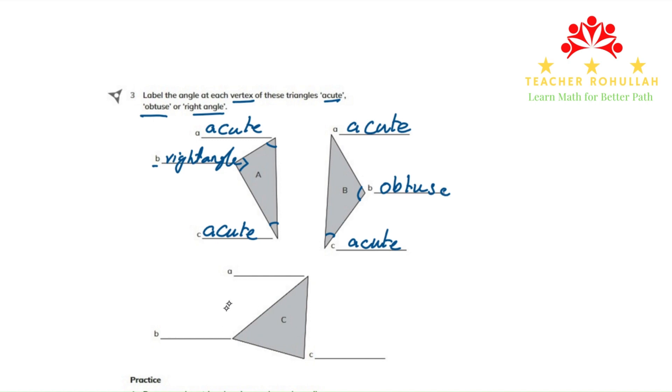In triangle C, the angle A is also acute. Angle B is also acute. And angle C is also acute. So in this triangle, all the angles are acute.